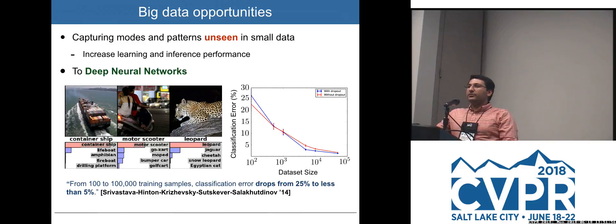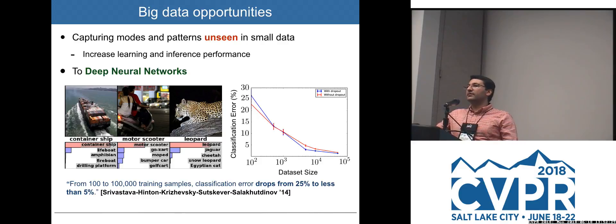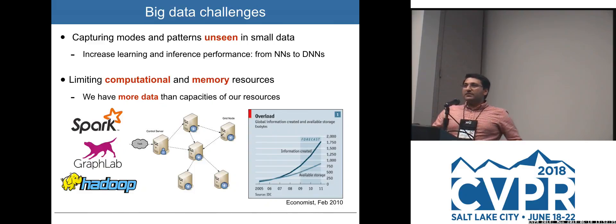On the other side of the spectrum, big data has been one of the main reasons for the success of deep neural networks. Consisting of millions of parameters, these are data-hungry systems, and the large amount of data has helped us effectively train deep neural networks to achieve significant performance boosts in tasks such as recognition and detection.